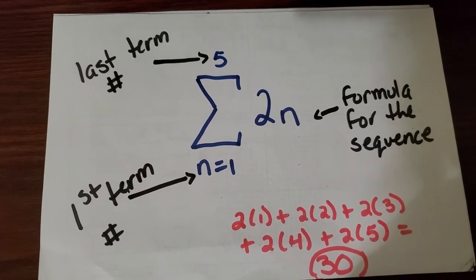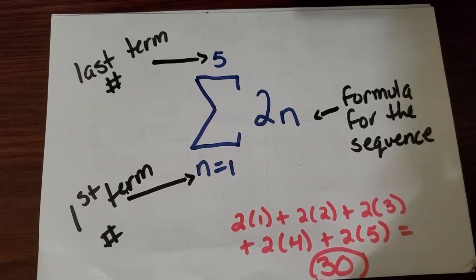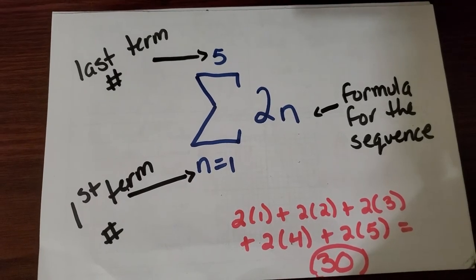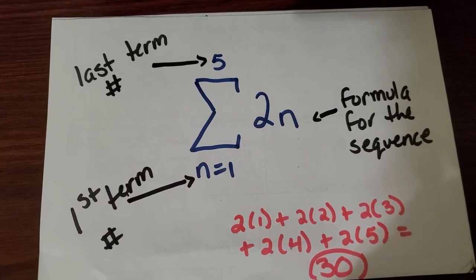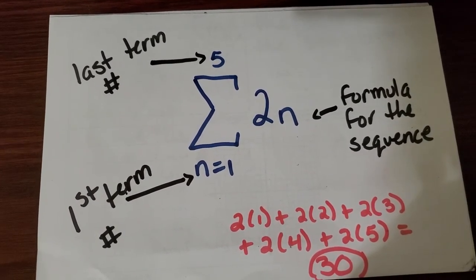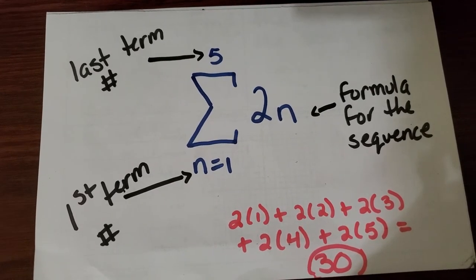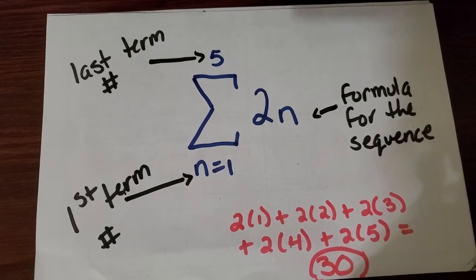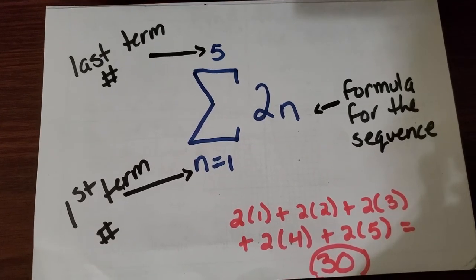The n equals 1 tells us that we want to begin with the very first term of the sequence. Five on top of the Greek letter tells us that's the last term that we want to add. And 2n simply is the formula for the sequence or the rule.